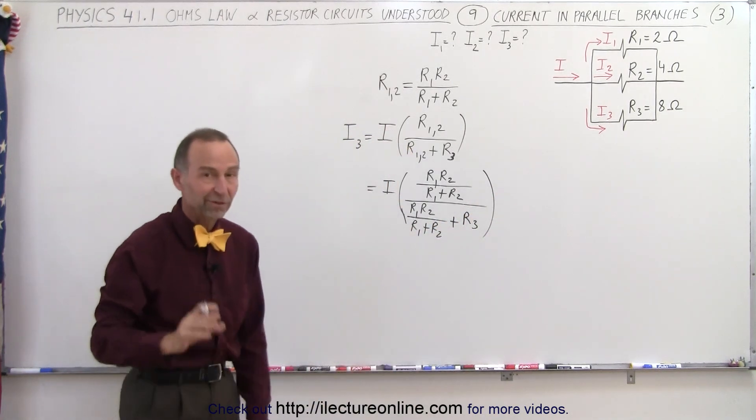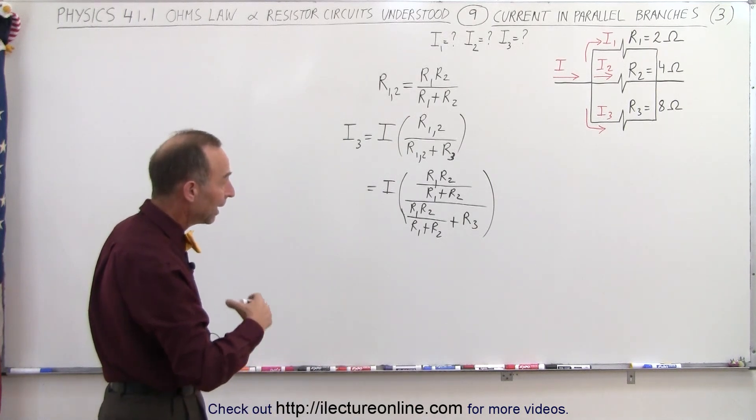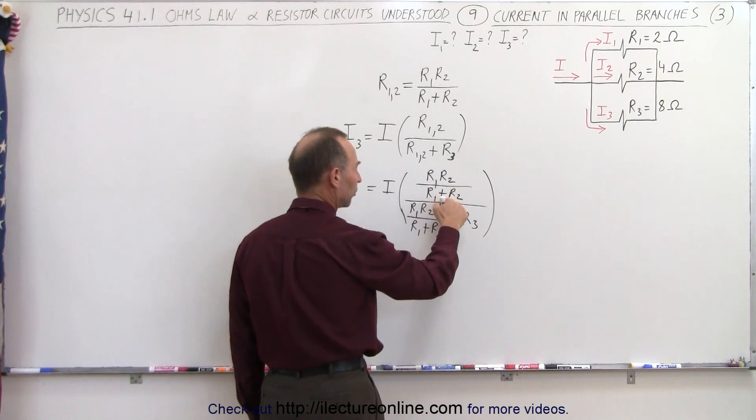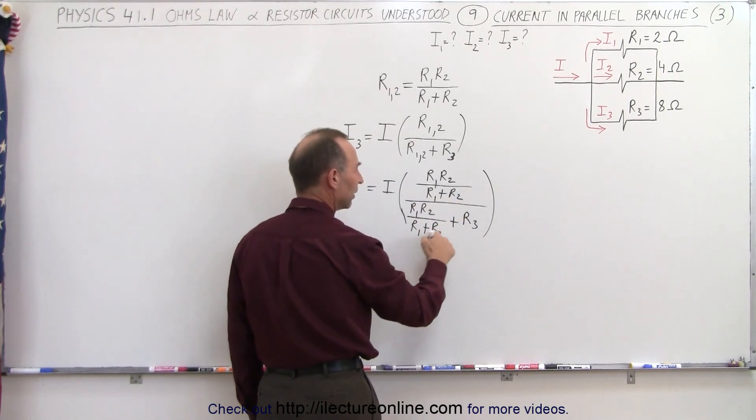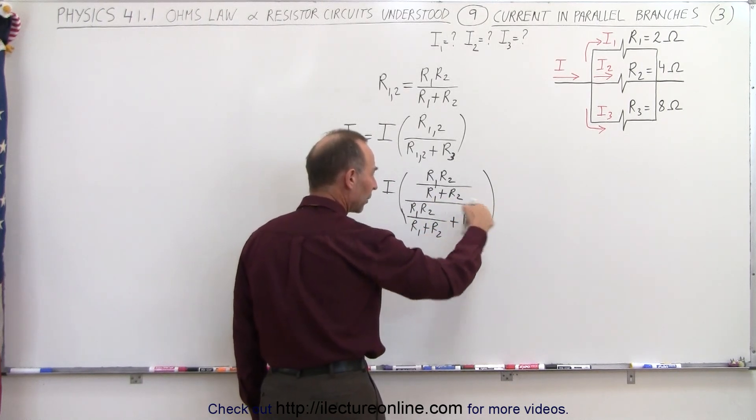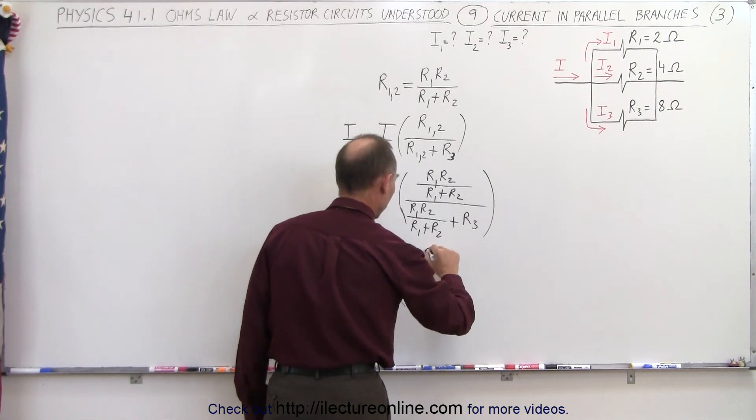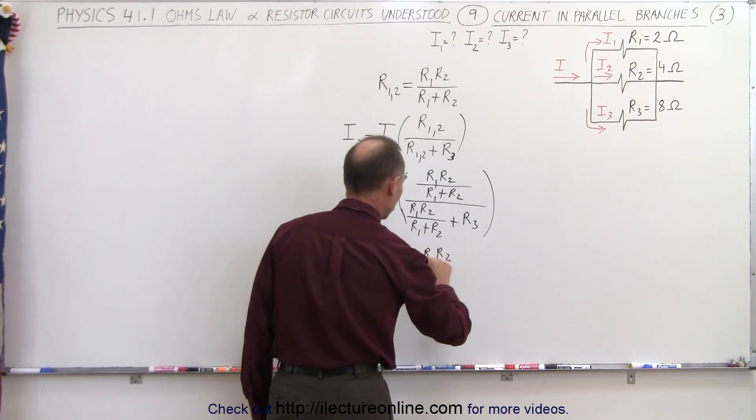Now all we have to do is simplify that algebraically. That's not hard to do because we have R1 plus R2 in the denominator. If we multiply this by R1 plus R2, we get another denominator like that. So this is I times R1 R2 over R1 plus R2.